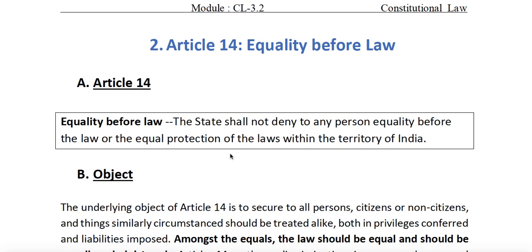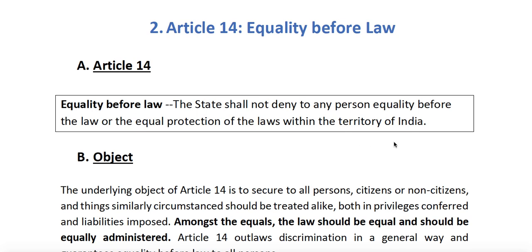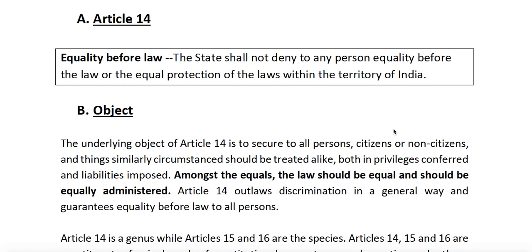Here is the text of Article 14: 'The state shall not deny to any person equality before law or equal protection of laws within the territory of India.' The jurisdiction is within the territory of India, so it is not applicable in any other country. The object is that amongst equals the law should be equal and should be equally administered.